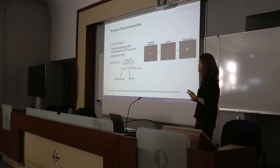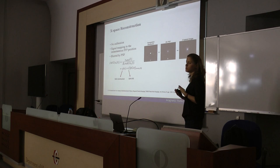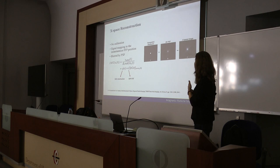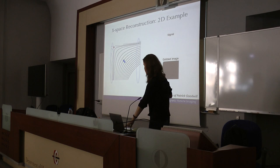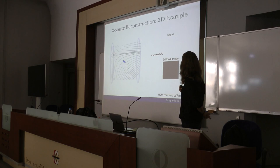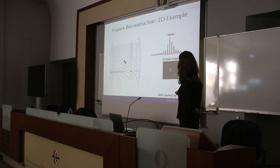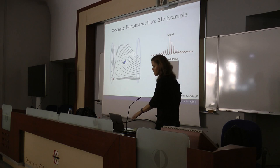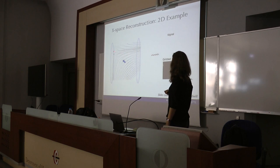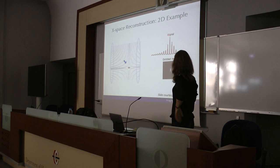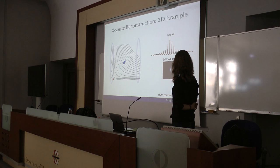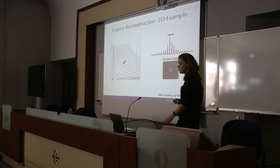Comparing x-space to system function reconstruction: system function reconstruction performs deconvolution and accounts for all system response, whereas in x-space it is integrated into the image — though further processing can improve resolution. In the x-space demonstration, the field-free point is swept in space. As the field-free point changes location, the nanoparticle aligns back and forth and generates an MPI signal. Knowing the position of the field-free point, the signal is gridded in space to produce a blurred version of the nanoparticle distribution as the MPI image.